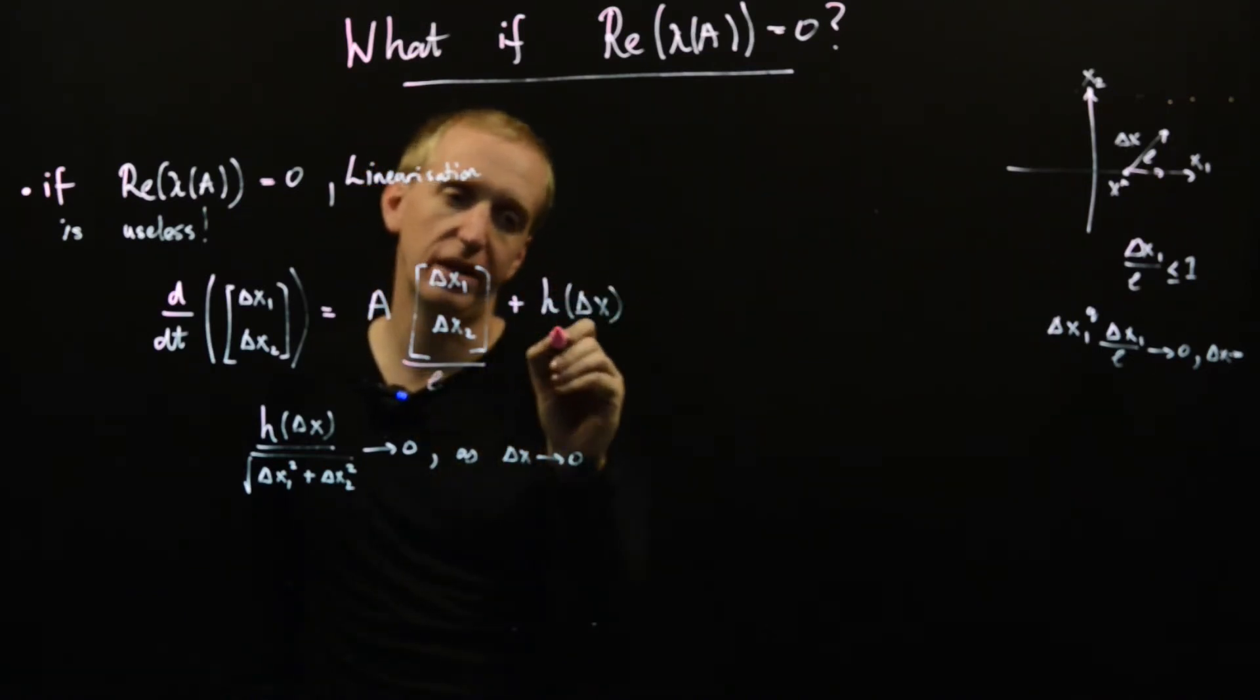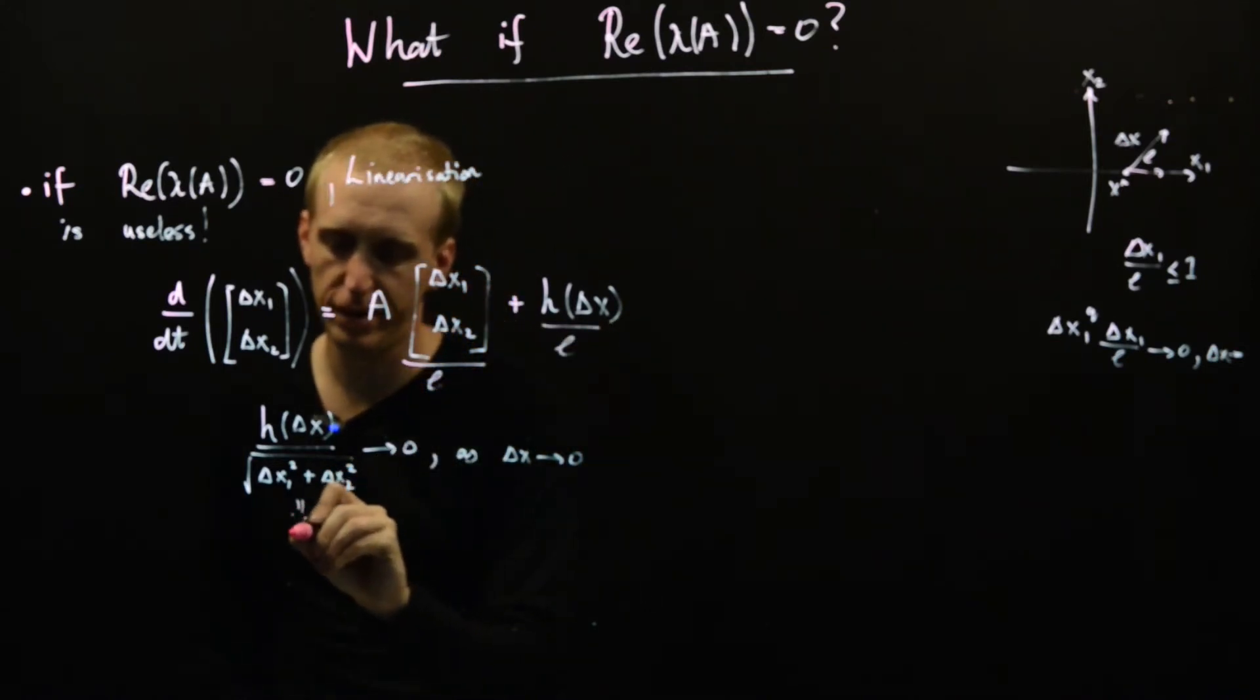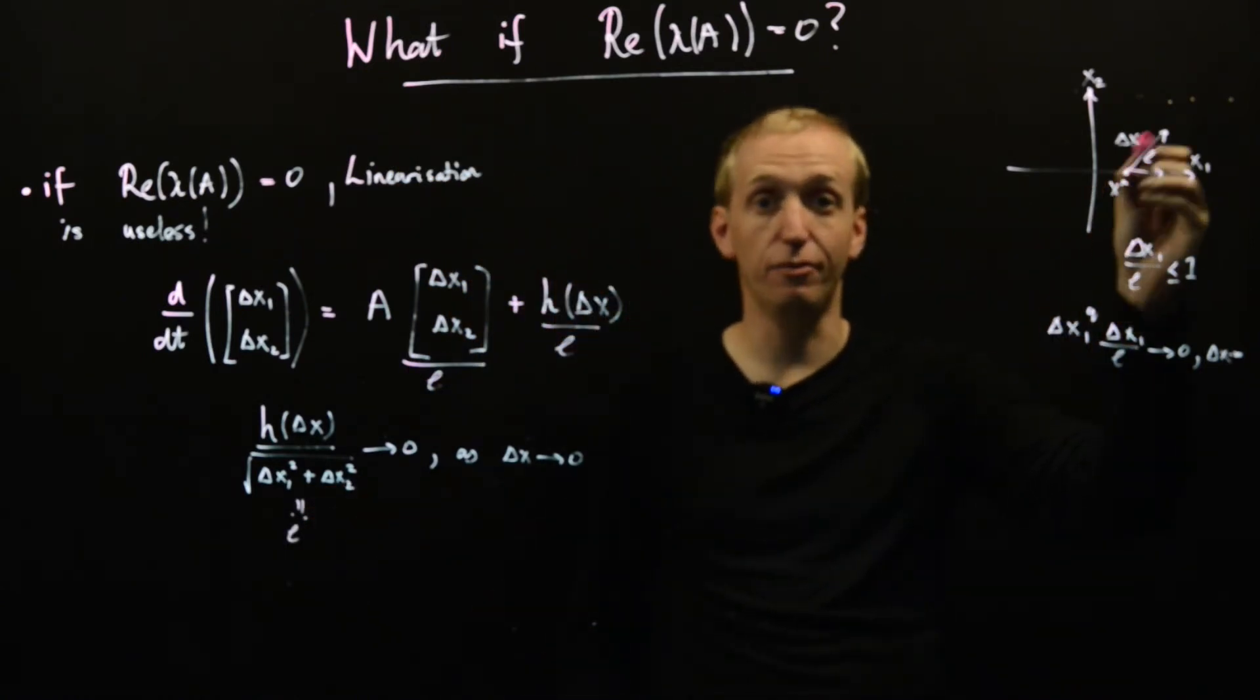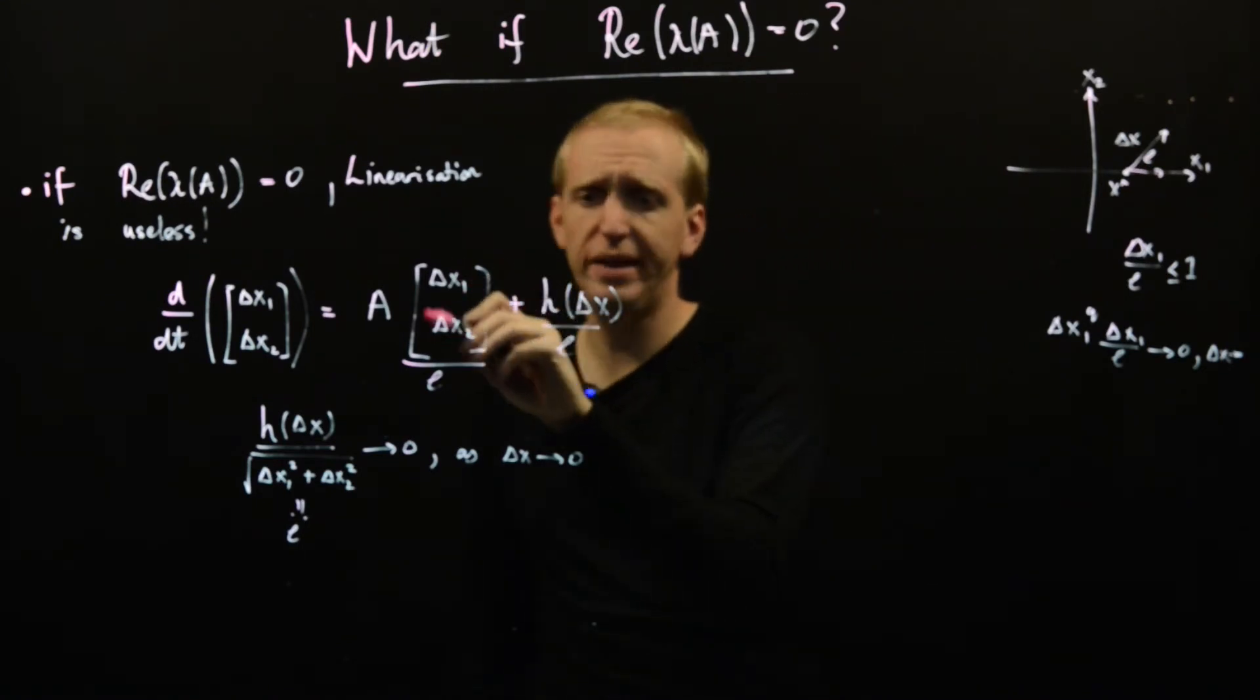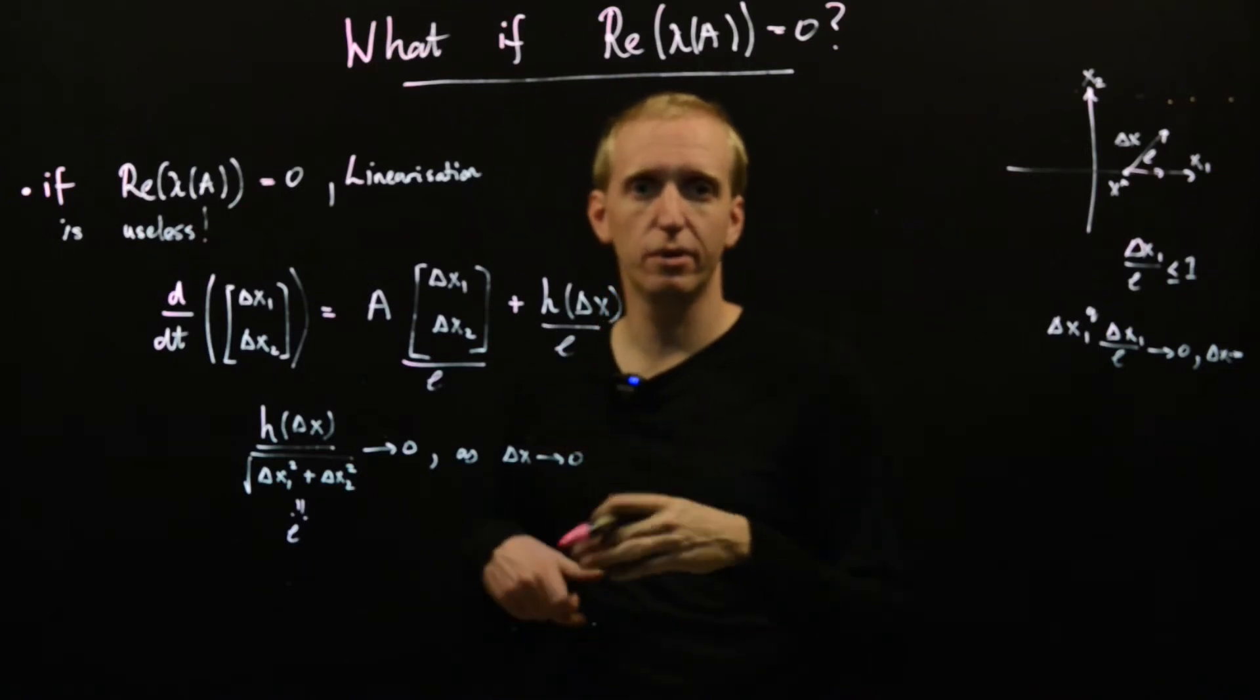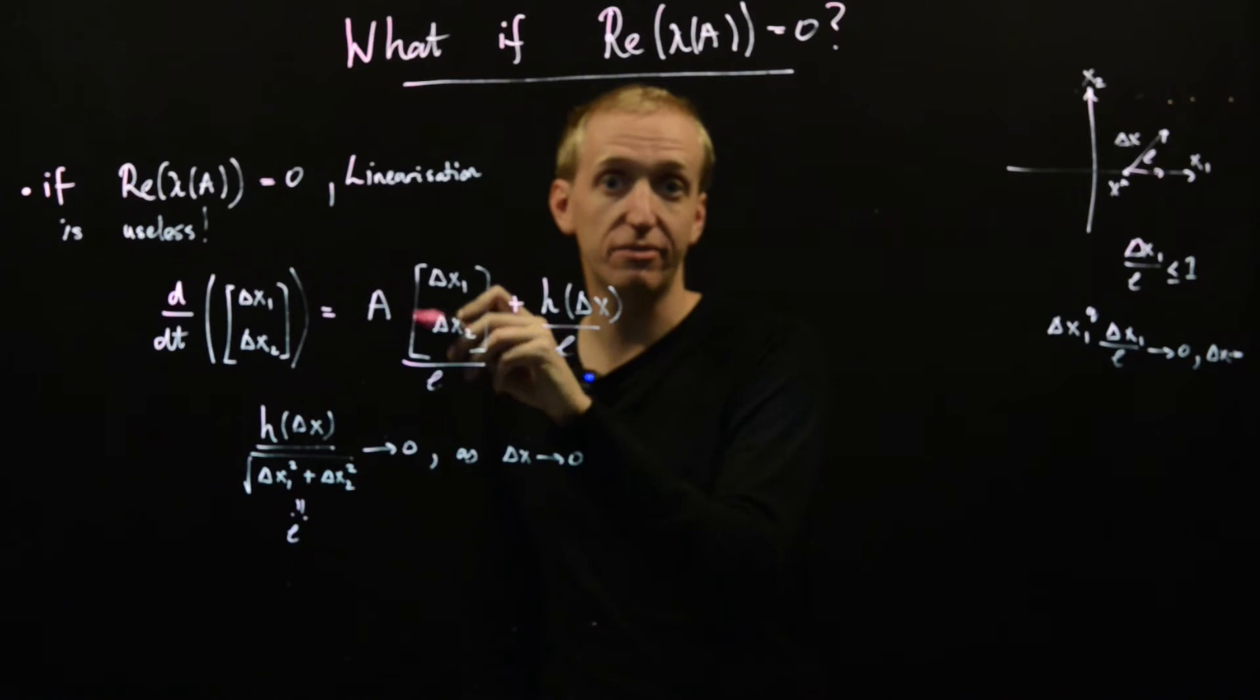And in particular, let's just compare it to the length. So I'm defining L to be precisely this term here. So L is just the length of the vector delta x. Now this linear term, when divided by its length, will give you something of order one.